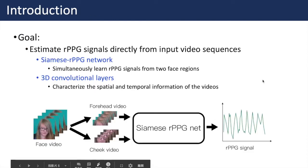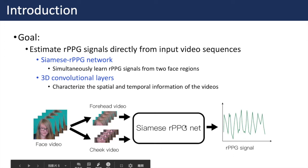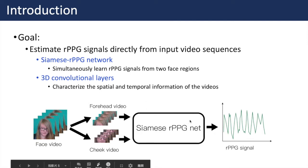Because these multi-stage methods do not directly estimate RPPG or heart rate from input videos, they are impractical for real-world applications. To tackle the aforementioned problems, we propose an end-to-end method to estimate RPPG signals directly from input video sequences. Our proposed network has two main features: the Siamese RPPG network and 3D convolutional layers. The Siamese network architecture is designed to simultaneously learn RPPG signals from two facial regions — the foreheads and the cheeks — using 3D convolutions to explicitly characterize spatial and temporal information. Each branch encodes one region into its corresponding one-dimensional RPPG signal.